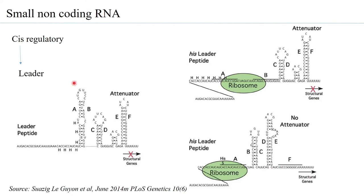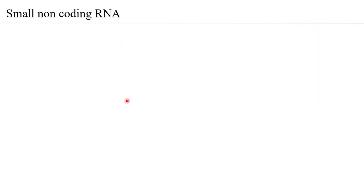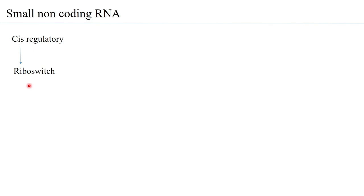Whether an attenuator with an intrinsic terminator is formed or without the intrinsic terminator determines whether the structural genes are going to be transcribed. That is the functionality of the leader RNA sequence, and because they are generally short sequences less than 200 base pairs, they fall under the small non-coding RNA. Of the cis-regulatory group, let us now look at the riboswitch.